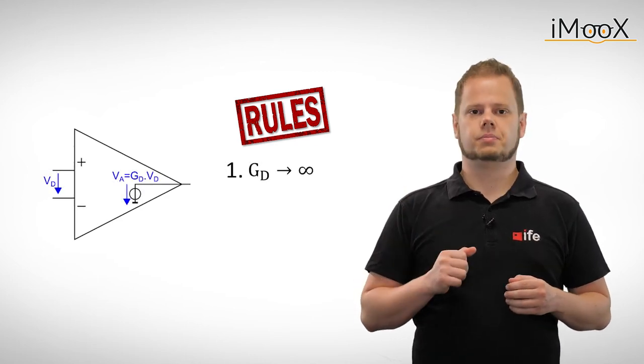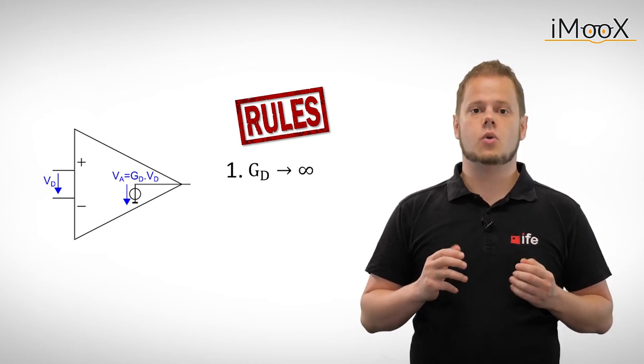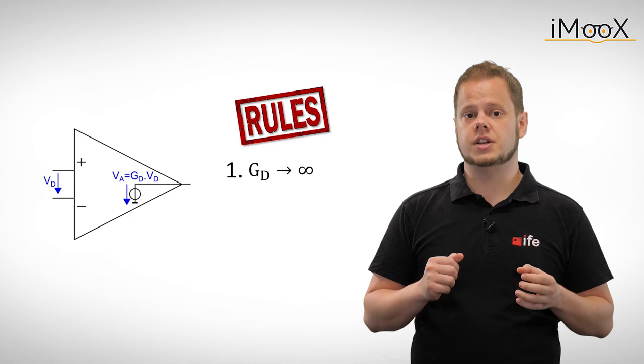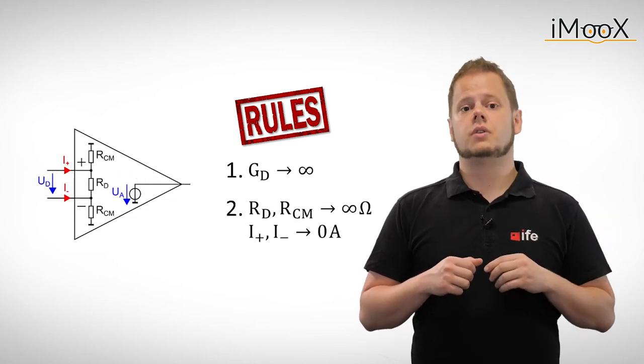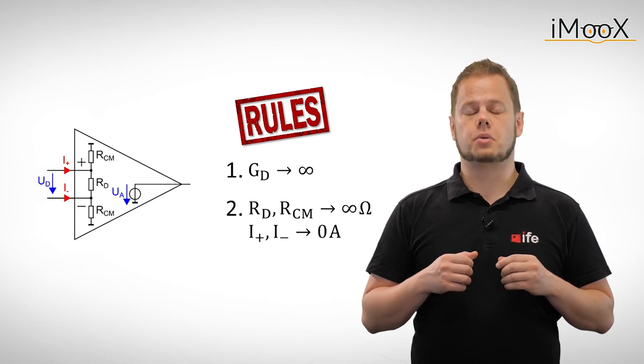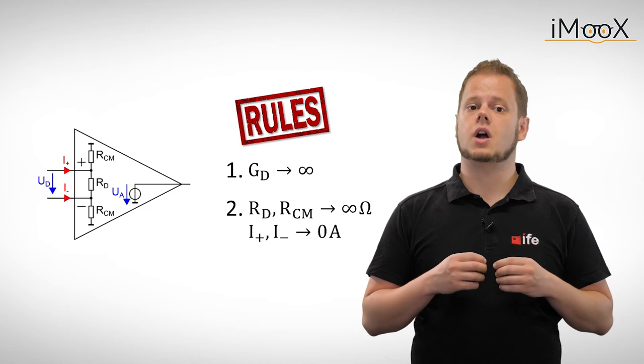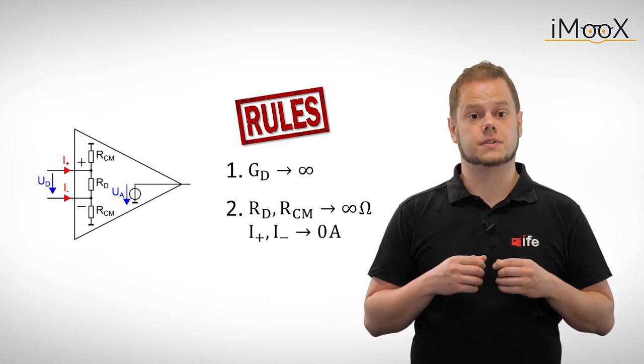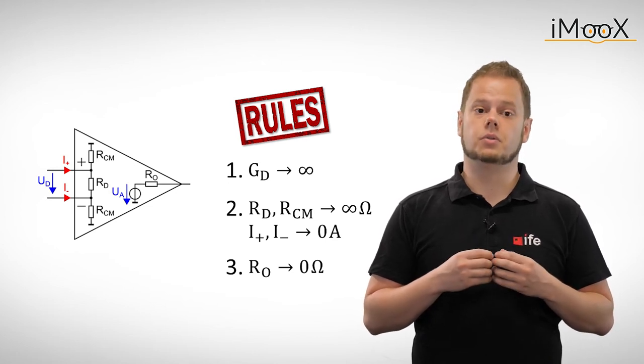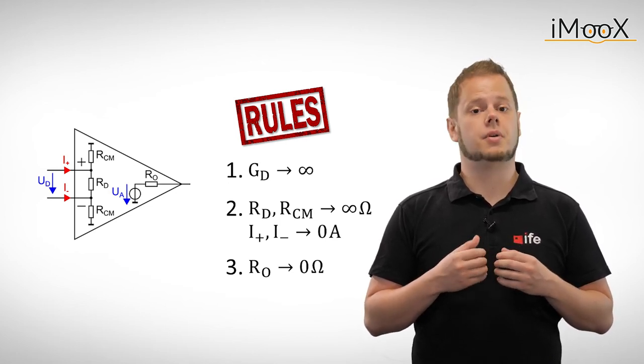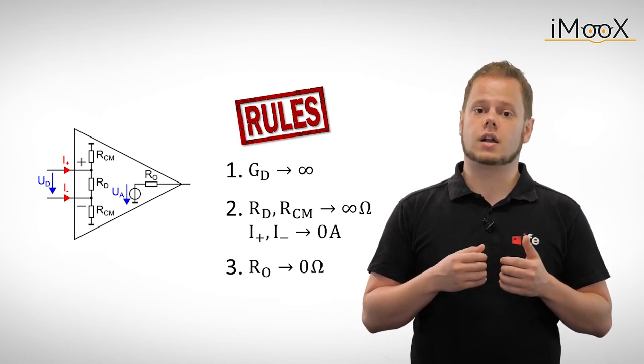The first rule: an operational amplifier has a very high differential mode gain GD, which means that the slightest change of input signals can be detected. The second rule refers to the input impedance for both common and differential mode. These are very high and in turn no currents are flowing into the inputs. The third rule states that the output impedance is very low. Thus the operational amplifier delivers the output voltage we want it to deliver regardless of the load.